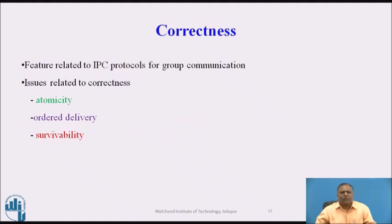Correctness: this feature is related to the IPC protocol for group communication. Issues related to correctness include atomicity — meaning apply to all or apply to none; order delivery — meaning passing messages one after another; and survivability — meaning messages will be delivered correctly despite partial failures.